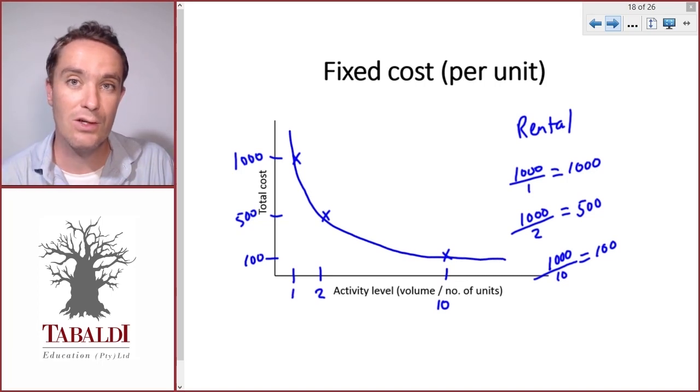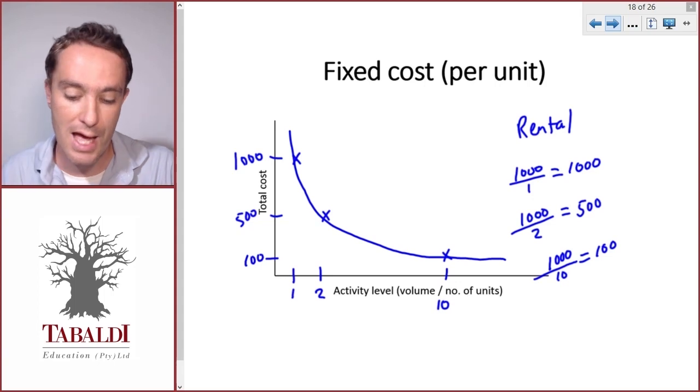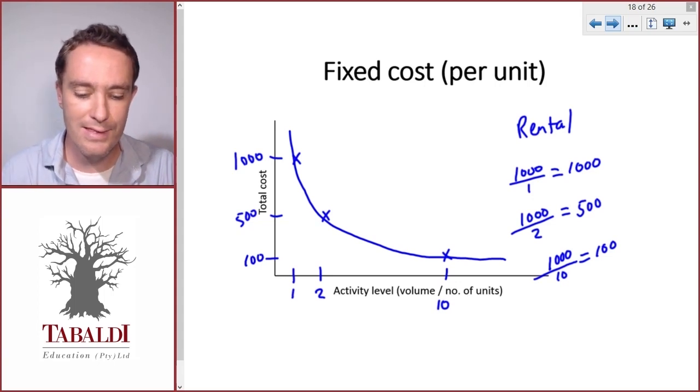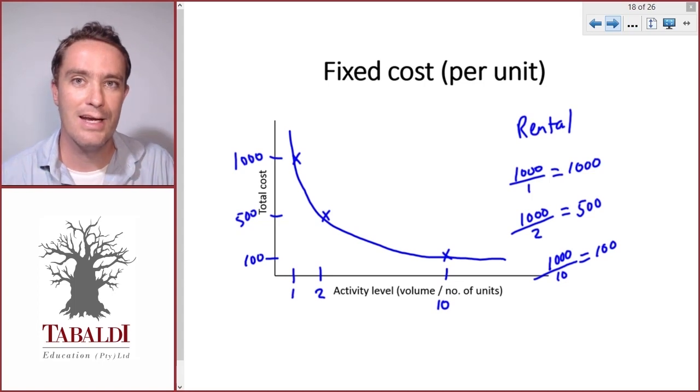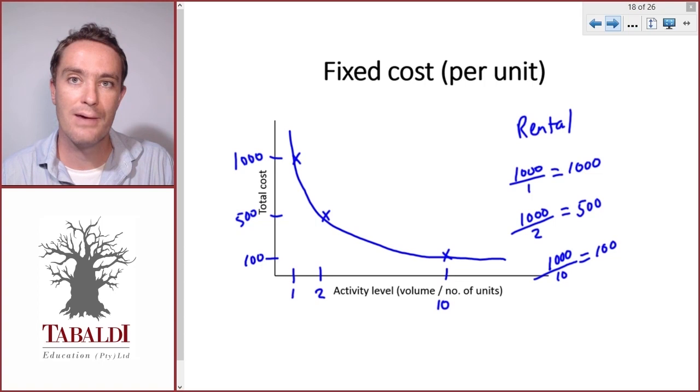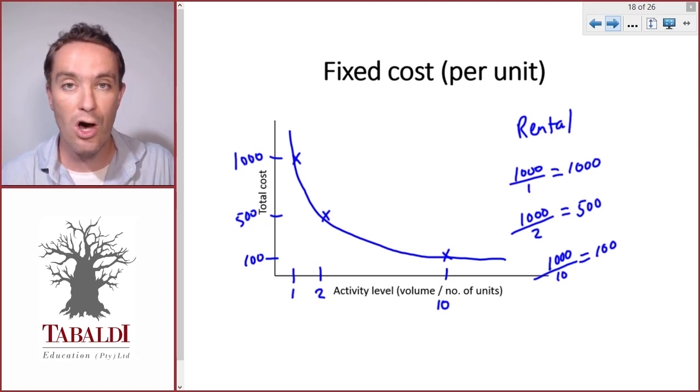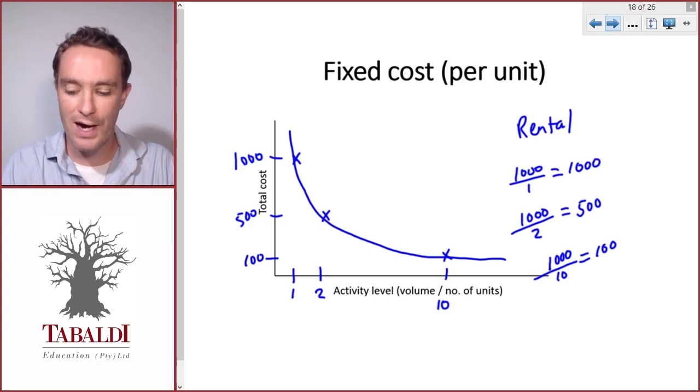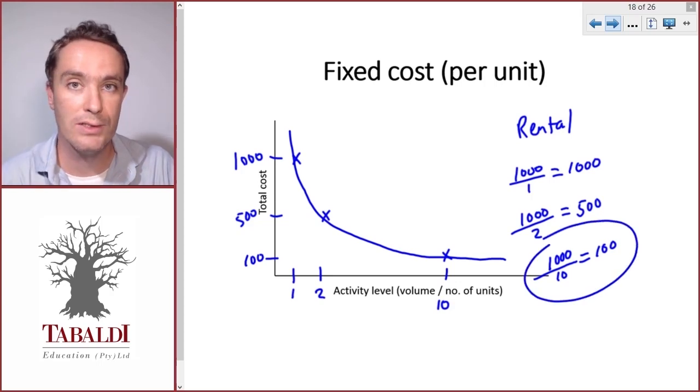You'll see a fixed cost per unit decreases as we produce more and more units, and that also illustrates the idea of economies of scale. So that's why products become less expensive on a per unit basis as you increase your activity level or produce on large scale or produce large volumes of units. It's because of the fixed cost that is divided by more units.